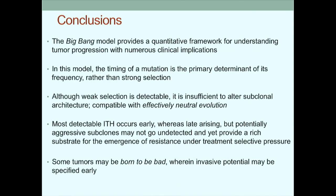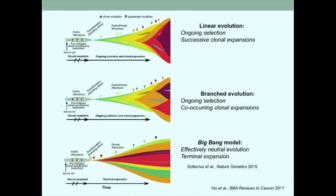There are different ways of thinking about how tumors evolve. In solid tumors, we see very limited evidence for the clonal succession model. Rather, we see abundant evidence for branched evolution. Other groups have demonstrated that Big Bang dynamics, or effectively neutral growth, are observed in other tumor types. This raises the question: what are the patterns we should expect to see under a model of effective neutrality versus strong positive selection? Two talented postdocs in my group set out to ask this question.